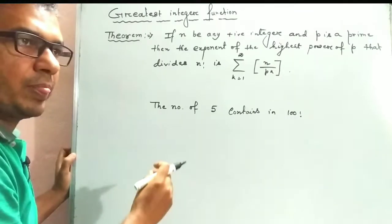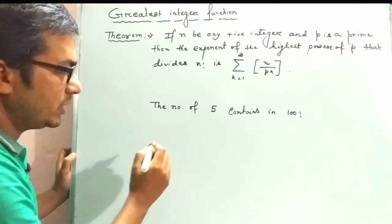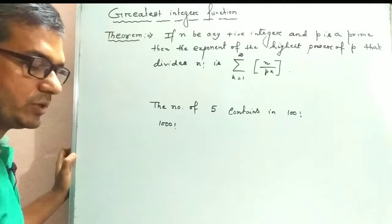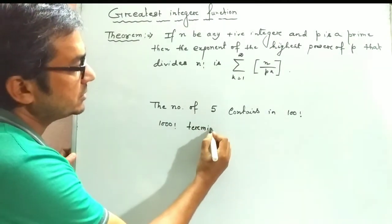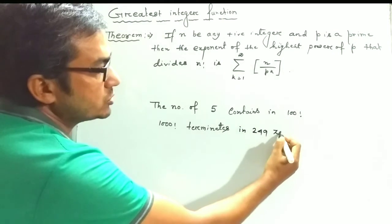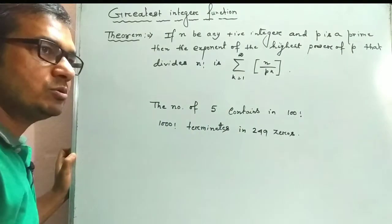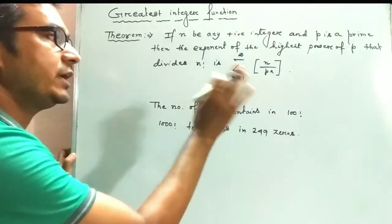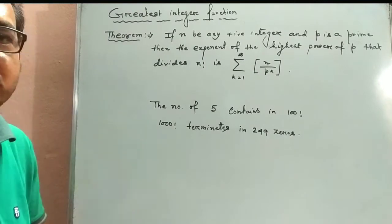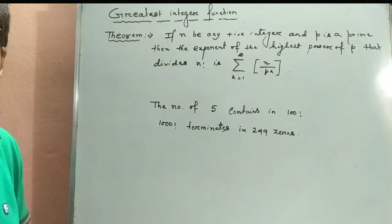Another question that arises is: in how many zeros does 1000 factorial terminate? So — find the number of 5s or 10s in 100 factorial. The answer to this type of question is given by this theorem.